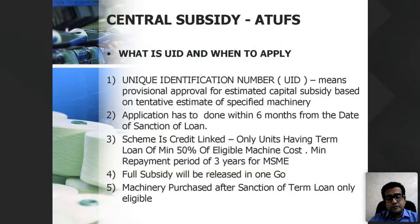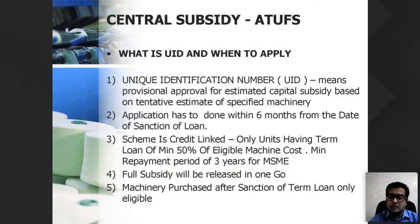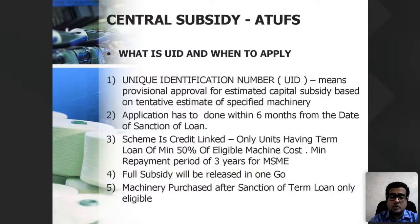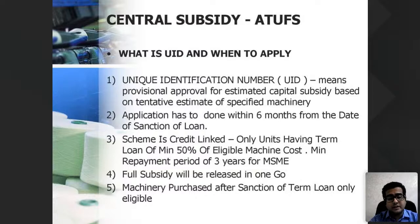A term loan for the machinery is mandatory — this scheme is credit linked, and only units with a term loan of minimum 50% of the eligible machine cost are eligible to apply for the UID. The minimum repayment period for the term loan should be three years. For MSMEs, after the joint inspection, the full subsidy is released in one go — no installments. Whatever 15% of the machine cost is applicable, it will be paid in full at once.